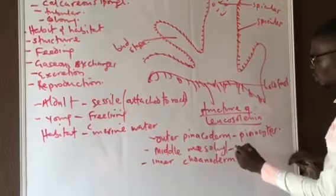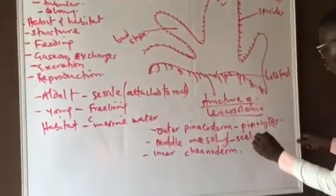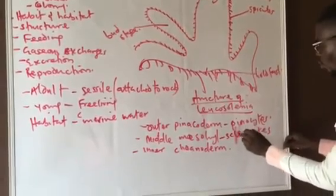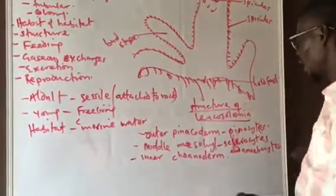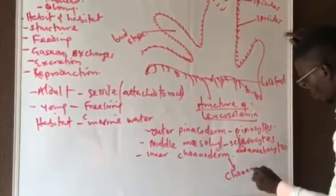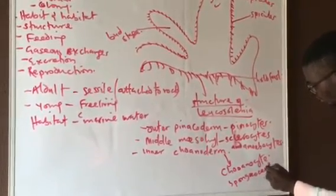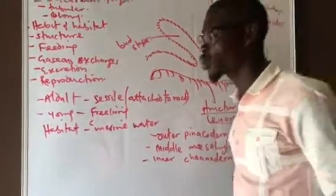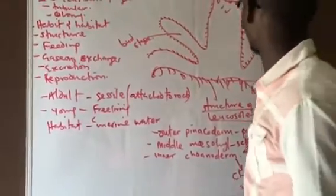Then we have the mesohyl, which consists of the skeletal materials. The skeletal materials are the spicules, and the cells that produce them are called sclerocytes. The mesohyl also contains the amoebocytes. Then the inner part consists of the choanocytes inside the spongocoel. So the three main parts of the sponge are: the pinacoderm, the mesohyl, and the choanoderm.